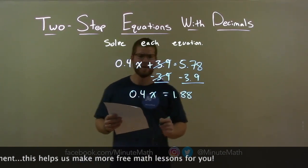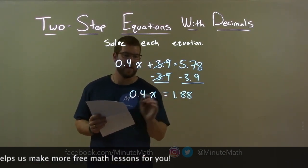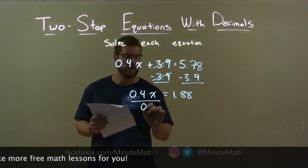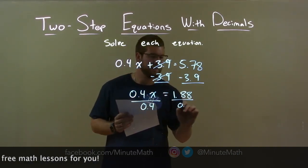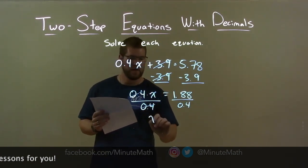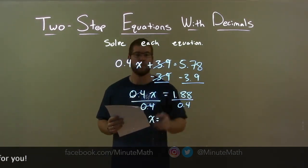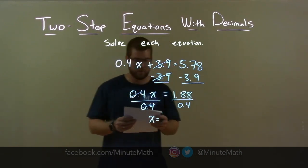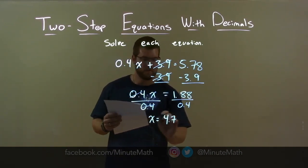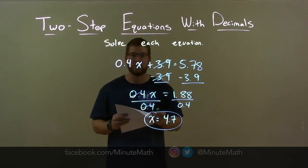Now 0.4 times x — opposite of multiplication is division. Divide both sides by 0.4 and the 0.4 cancels, leaving x by itself on the left. On the right, 1.88 divided by 0.4 is 4.7. So x equals 4.7 is my final answer.